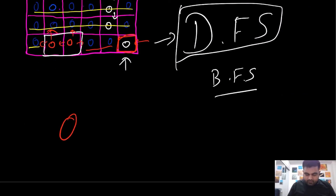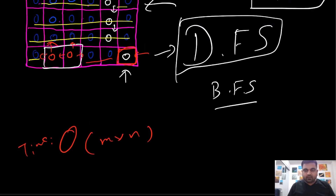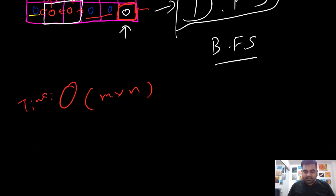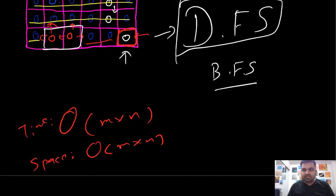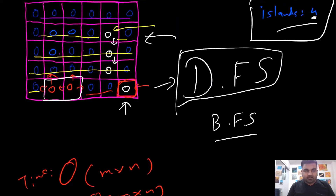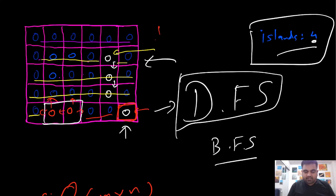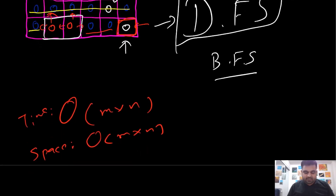The time complexity in this case would be O(M×N), because we have to iterate over the entire grid that is given. The space complexity would also be O(M×N) in the worst case — suppose we are given a grid where all the values are ones; for every single element we'd have to iterate over the entire grid, and that could be the worst-case space complexity.